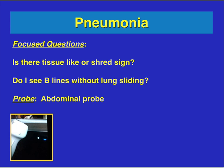So in pneumonia we have a few focus questions. First, is there a tissue-like or shred sign? Second, do I see B-lines without lung sliding? The probe you're going to use is either the cardiac or the abdomen probe. Typically I use the abdomen presets, but some of these newer machines actually have a lung preset which also allows you to see all the appropriate structures.